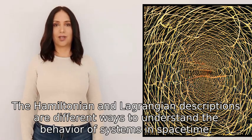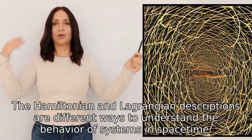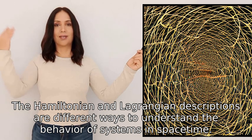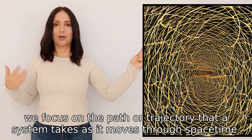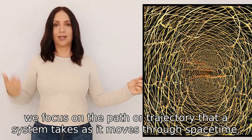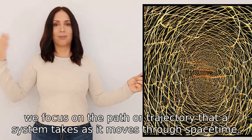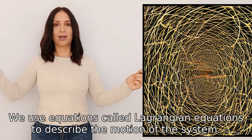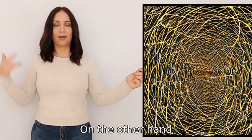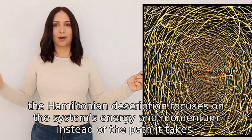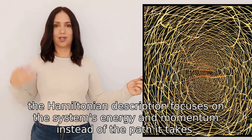The Hamiltonian and Lagrangian descriptions are different ways to understand the behavior of systems in spacetime. In the Lagrangian description, we focus on the path or trajectory that a system takes as it moves through spacetime. We use equations called Lagrangian equations to describe the motion of the system.